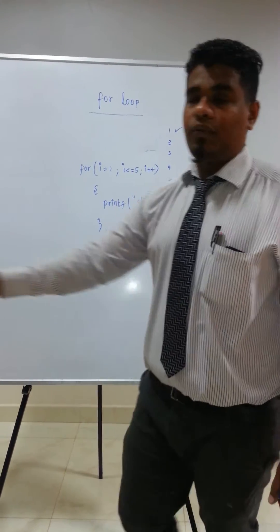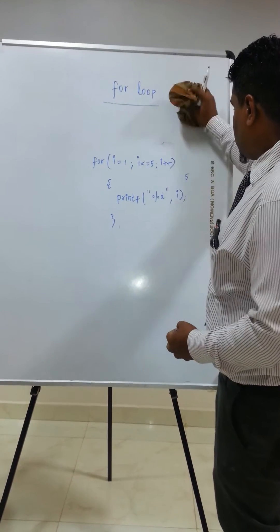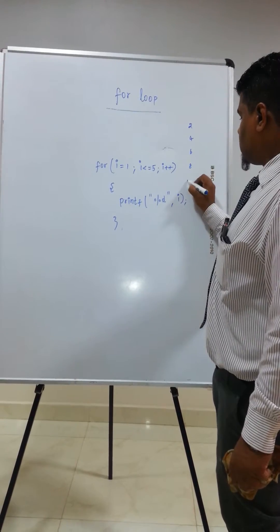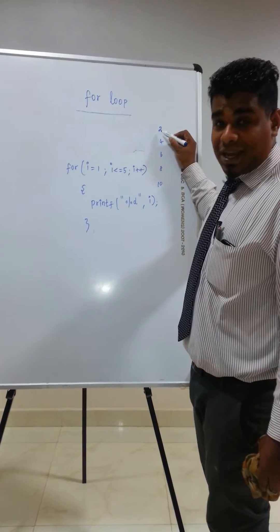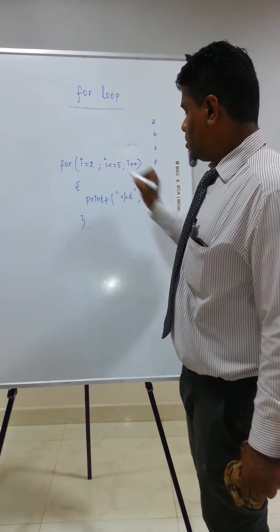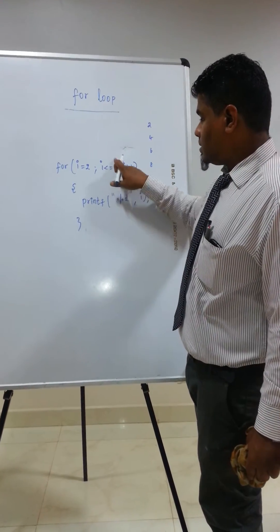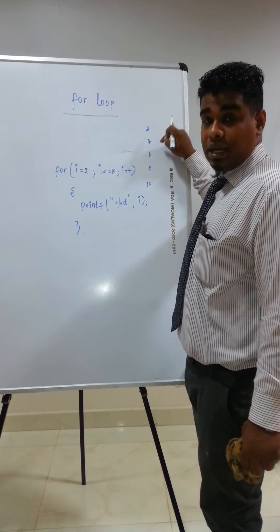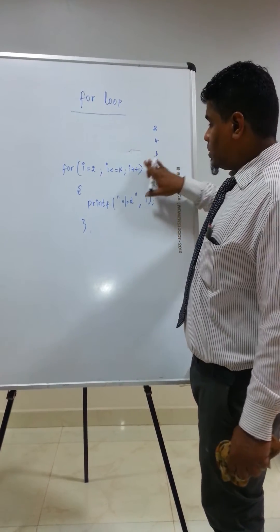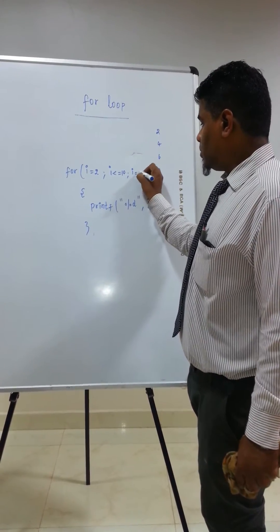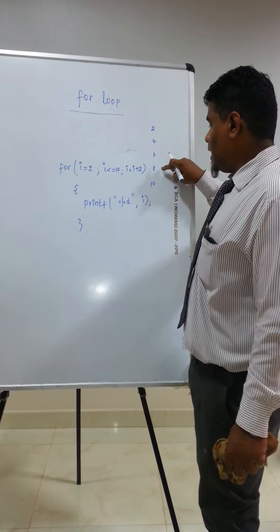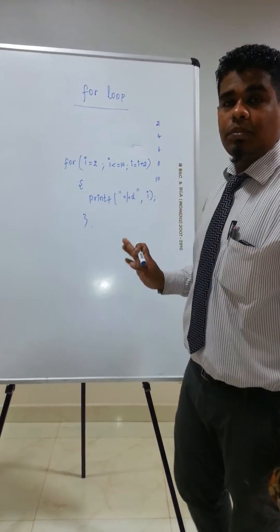If I want to print numbers like 2, 4, 6, 8, 10, I must look at what is my starting value. My starting value is 2, so I write i = 2. My ending value is 10, so I replace 5 with 10 in the condition. Here, the value is incrementing by 2, so I need to change the increment to i = i + 2. Now the values 2, 4, 6, 8, 10 will be printed. This is the concept of the for loop.